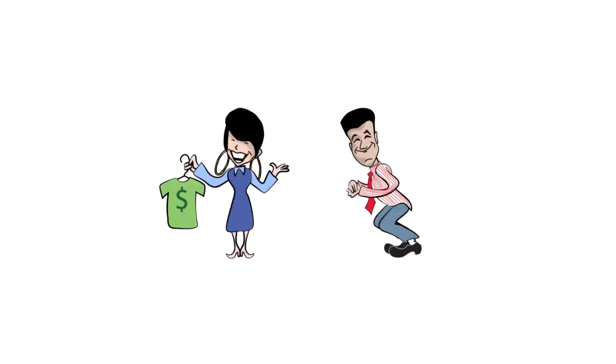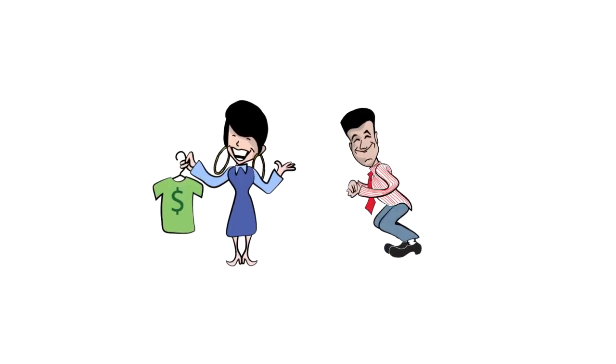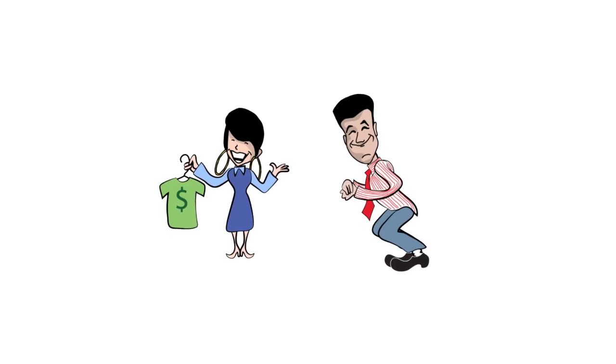We're going to revisit the sales cycle flowchart introduced in the lecture. Let's start by meeting Jill and Jimmy. Jill is a purchasing manager for Quick Clothing. Jimmy works for our client in sales.